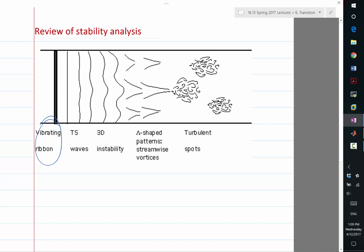This is usually how a boundary layer transitions in the natural transition case. So there is some initial disturbance that goes into the boundary layer.